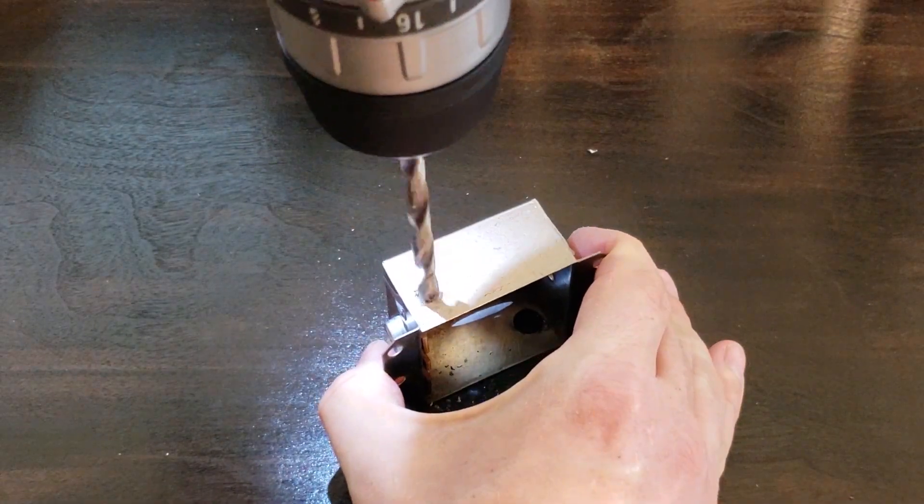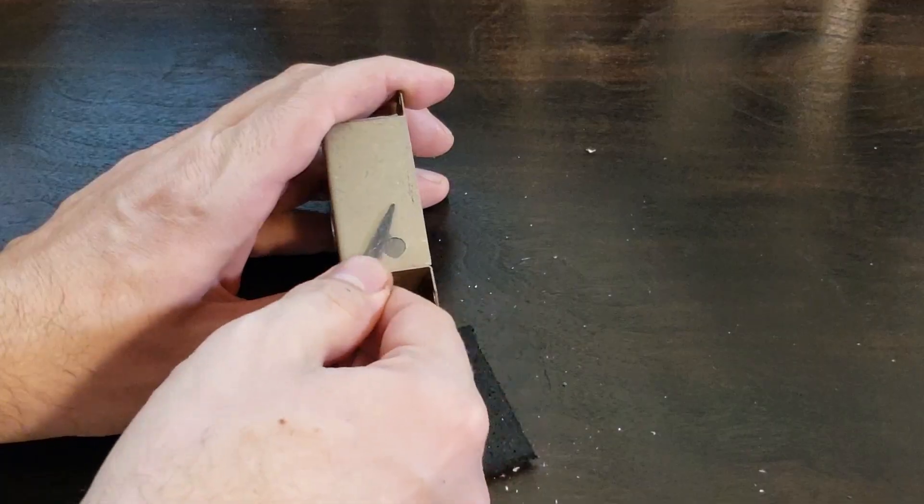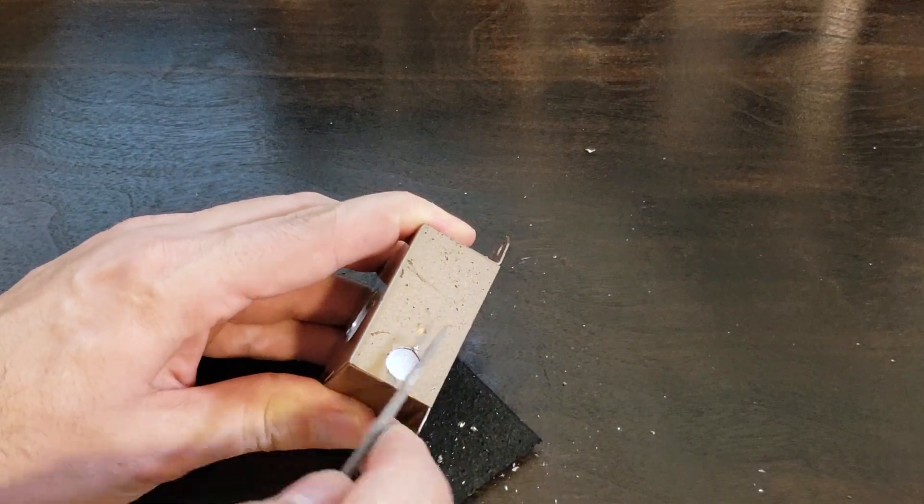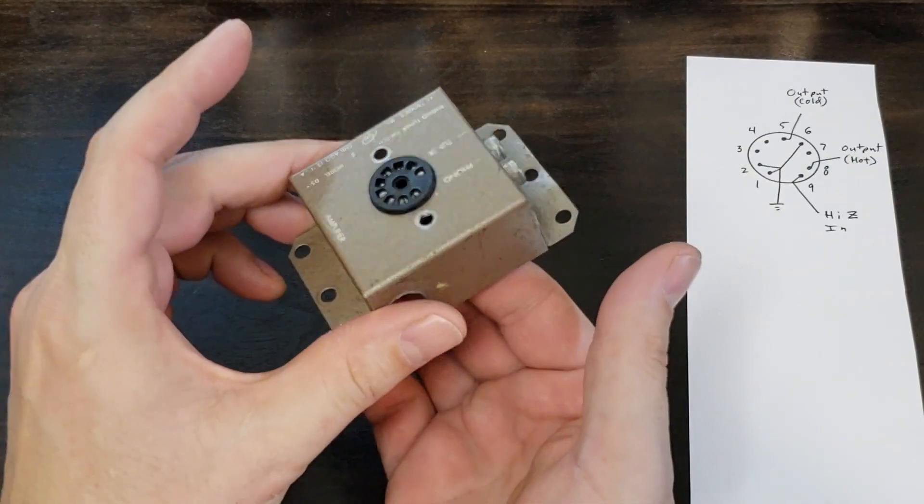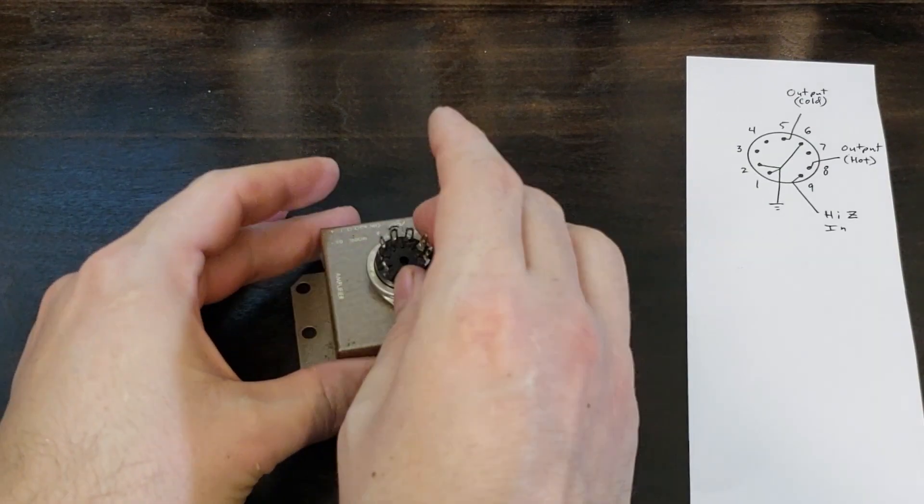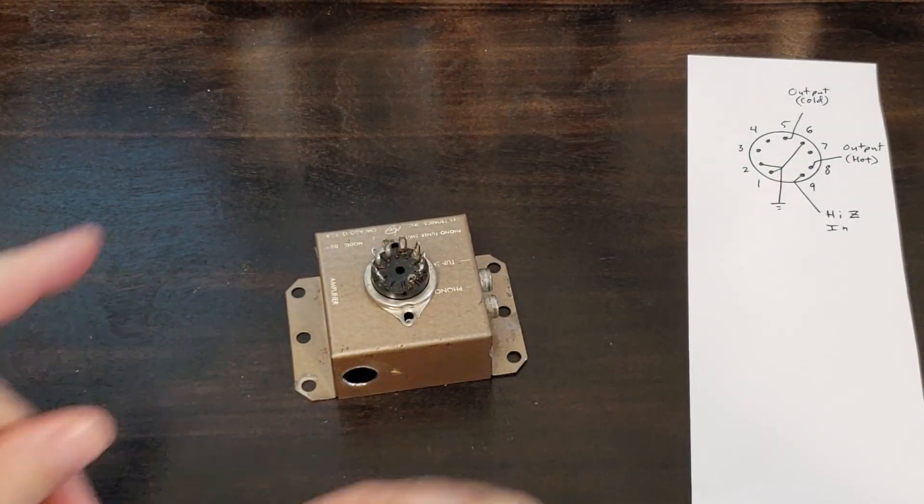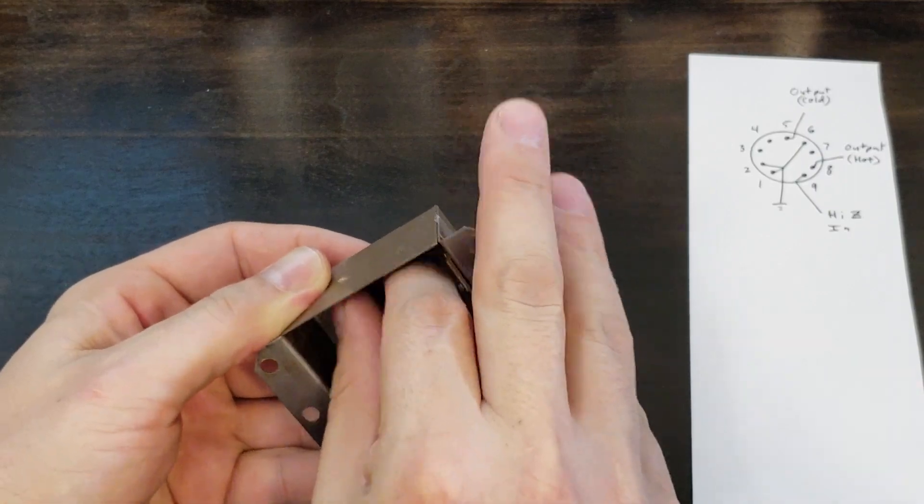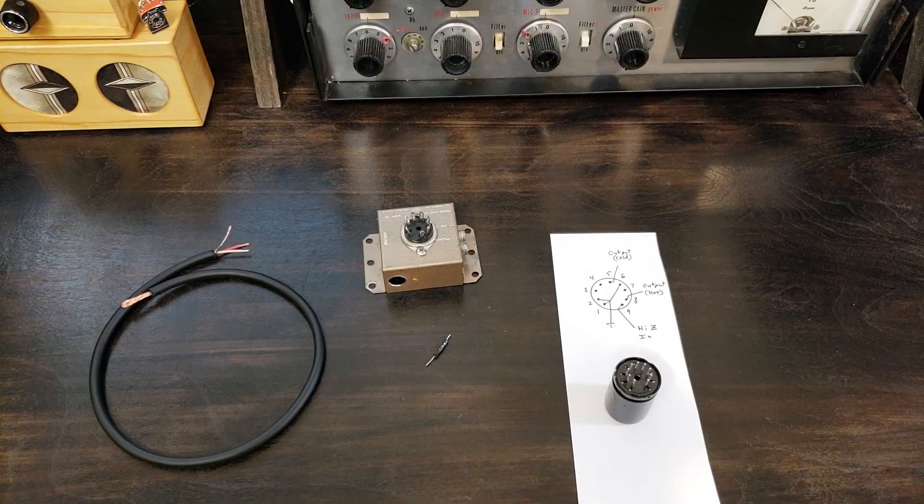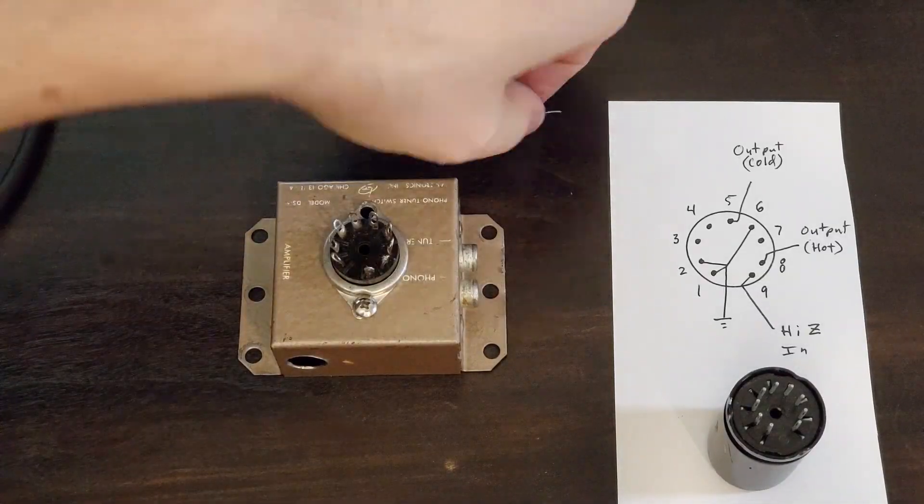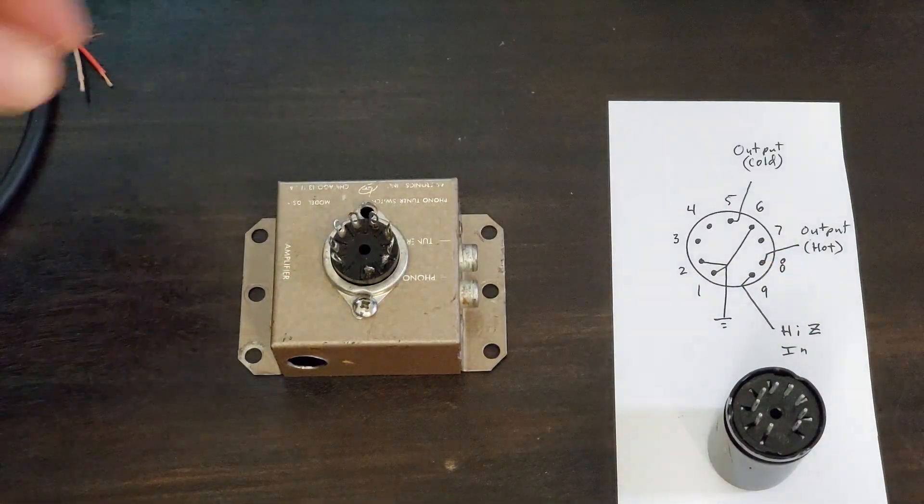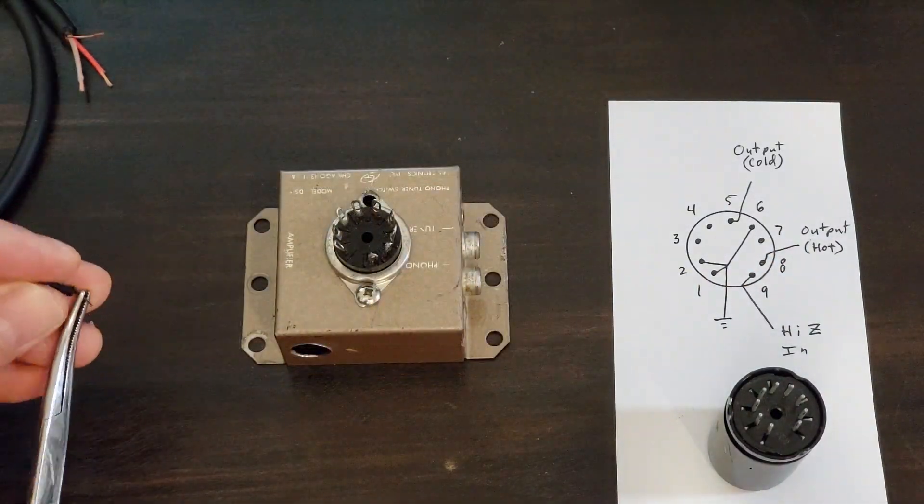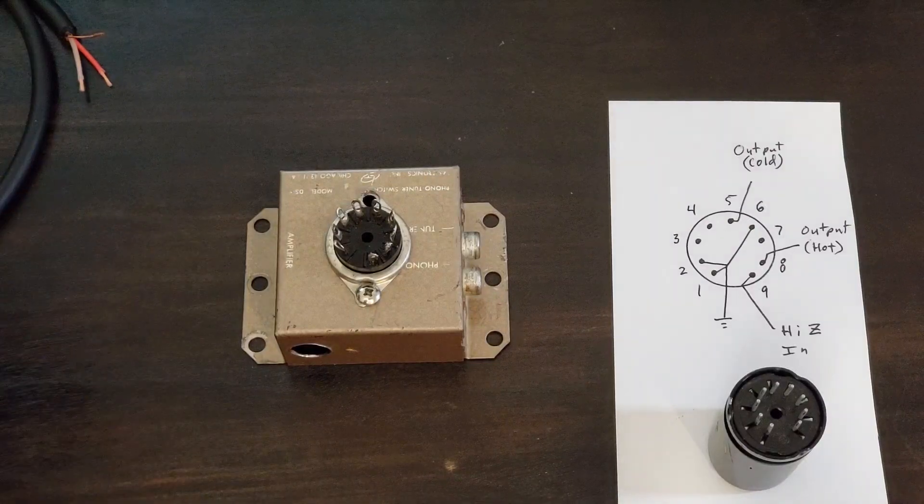When my holes are drilled, I like to use files to clean up any burrs. And now we're going to wire the socket. To wire the socket, since this is such a small enclosure, I'm going to put my tube socket on upside down and wire from the top. So looking at our diagram, pins one, two, and six are grounded. So instead of using wire for each pin, I'm going to use one single jumper wire to go from pin two, one, to six.